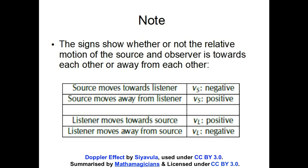Just going over this again: when the sound source moves towards the listener, V_S is negative. When the sound source moves away from the listener, V_S is positive. When the listener moves towards the source, V_L becomes positive. When the listener moves away from the source, V_L becomes negative. We'll uncover why this is so through a worked example.